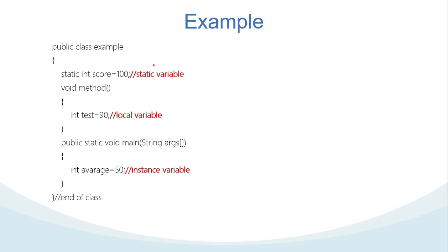Here is the example of the variables. We see the static variables here from the keyword static, and then local variables located inside the method, and then the last one, instance variables, is inside the main method so it belongs to the class.